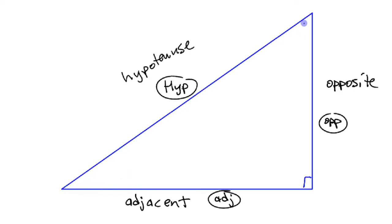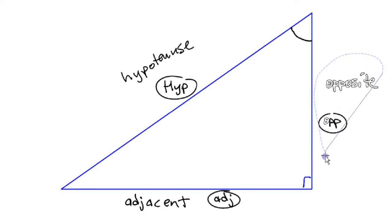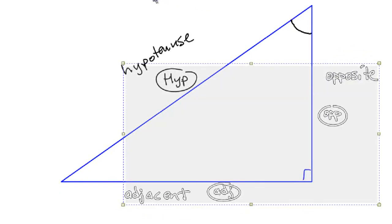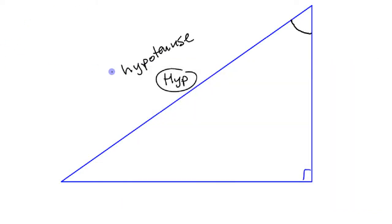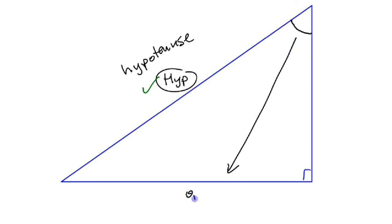Now, if we were looking at it from the point of view of this other angle up here, think about what changes and what doesn't change. The hypotenuse is still the longest side across from the right angle — that stays the same even when you look from the other angle. But the other two sides switch: before, this was the opposite and this was the adjacent, but now looking from this angle, that's across, so this becomes the opposite. If you look from the point of view of the other angle, the opposite and adjacent switch.